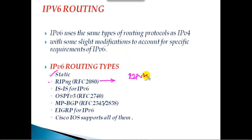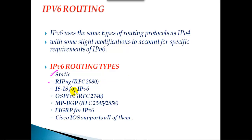In IPv4 we have RIP version 2; in IPv6 we call it RIPng — next generation RIP. When it comes to the metric or features, everything remains the same. The maximum hop count is still 15 and the metric is calculated based on hop counts. Similarly, IS-IS also supports IPv6, and then OSPFv3 — the protocol we use for IPv4 is OSPFv2, and here we call it OSPFv3.